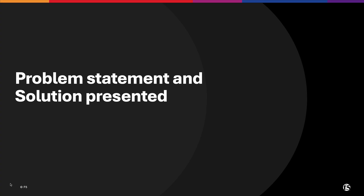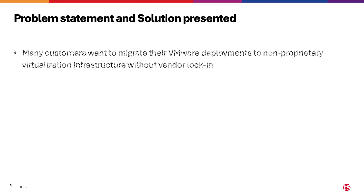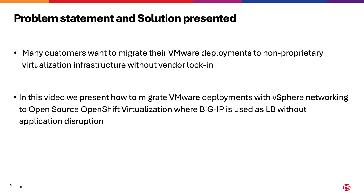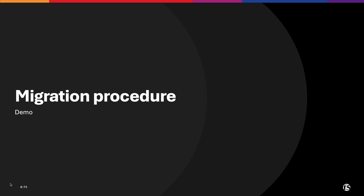Problem statement and solution presented. Many customers want to migrate their VMware deployments to non-proprietary virtualization infrastructure without vendor lock-in. In this video, we present how to migrate to OpenShift Virtualization, where BigIP is used as a load balancer without application disruption.